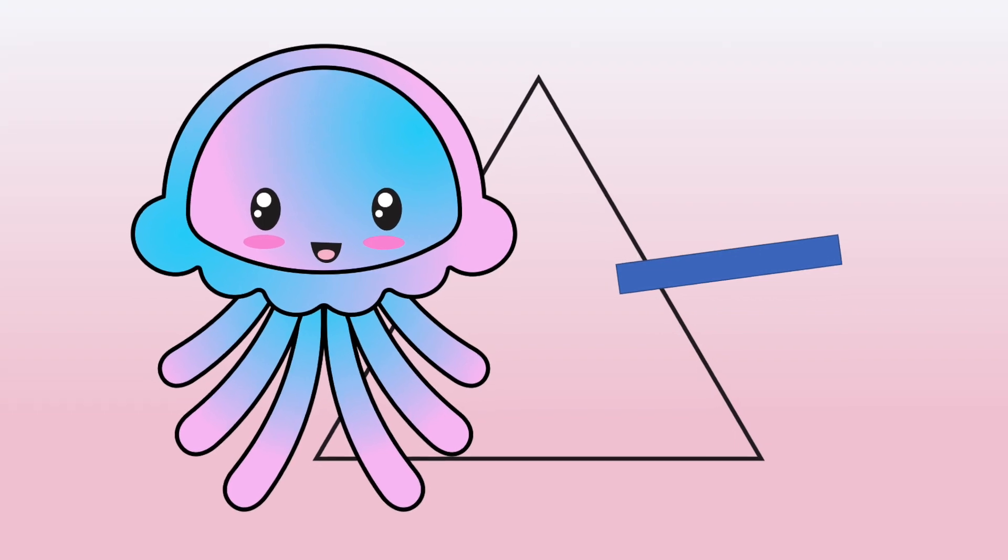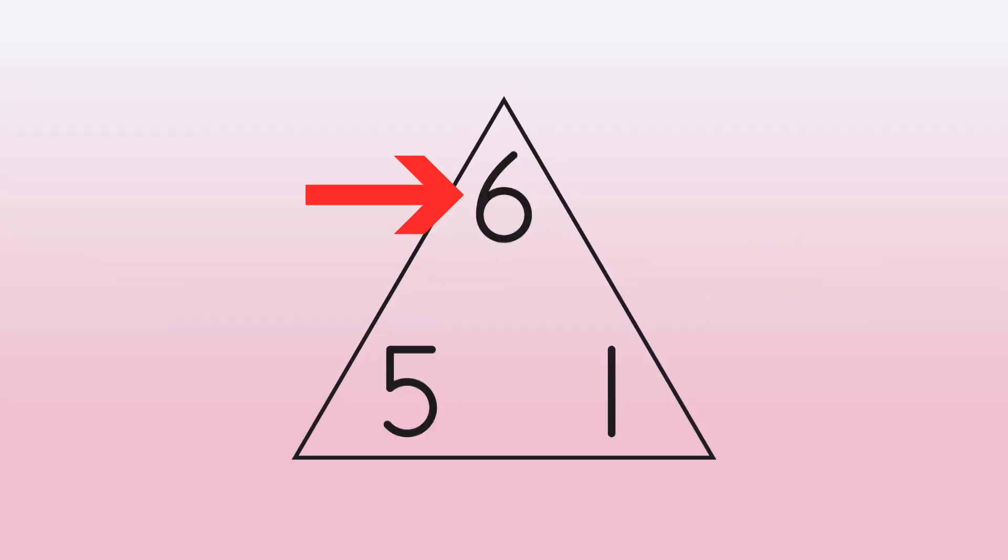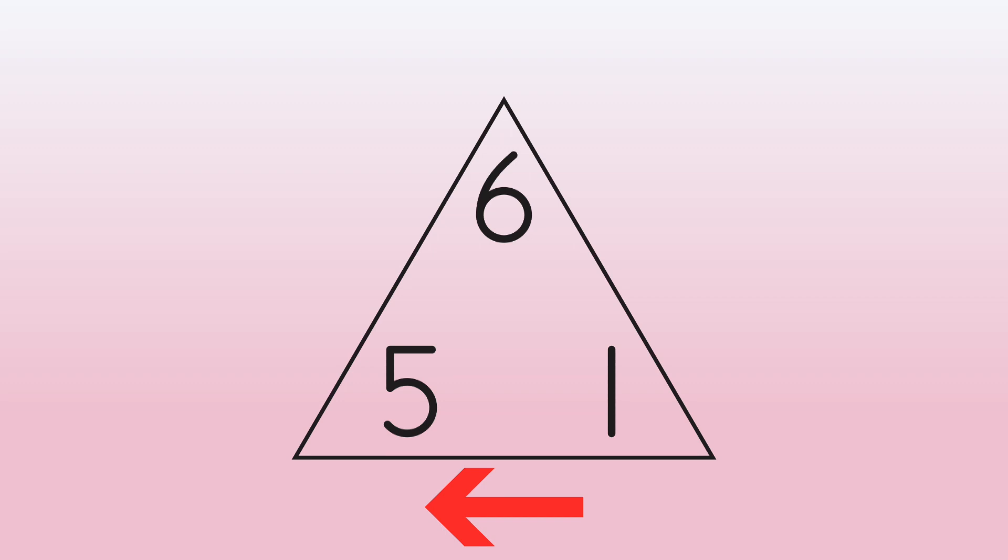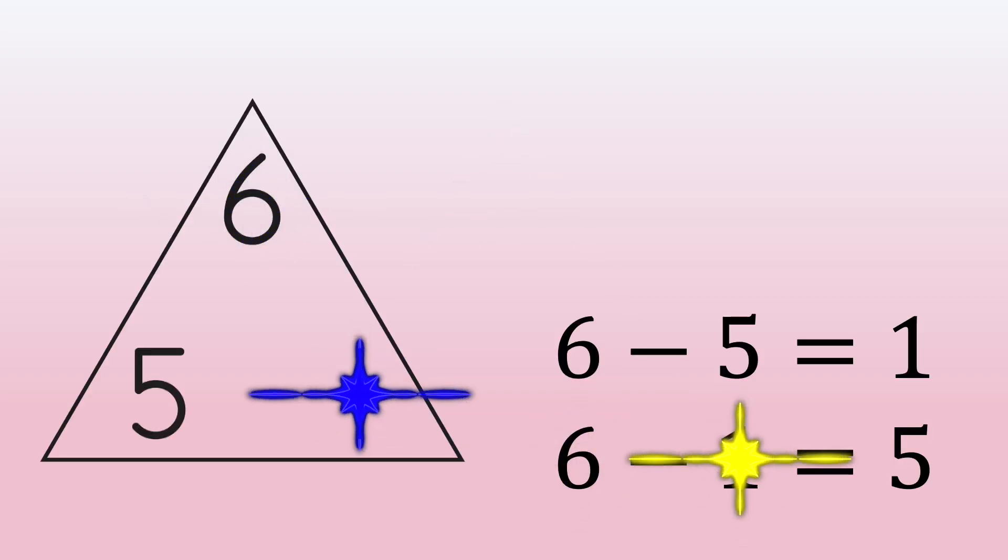Next, let's try subtraction. Start at the top. Go down and over. 6 minus 5 equals 1. And go down the other way. 6 minus 1 equals 5.